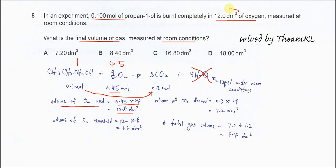Because in this question, it started with 12 dm³ oxygen. So we use 12 minus 10.8. So oxygens that remain will be 1.2 dm³.